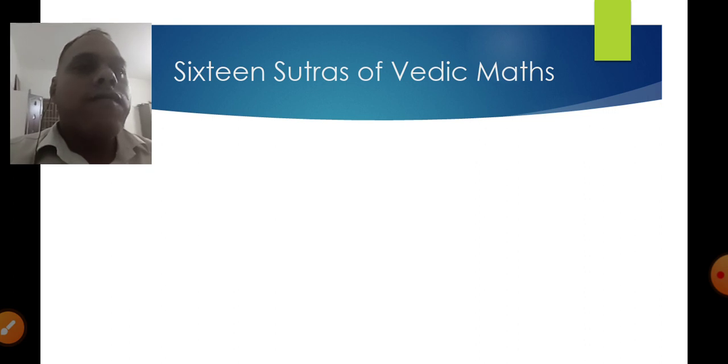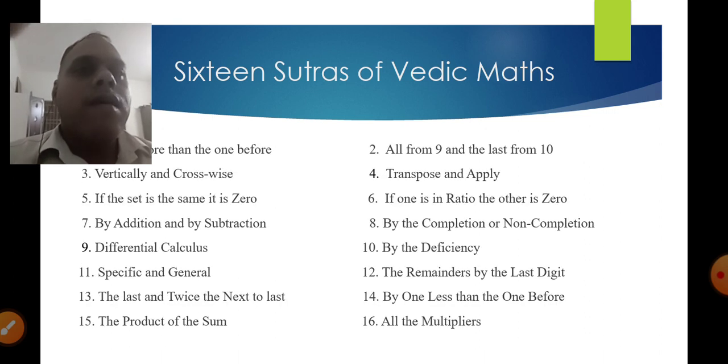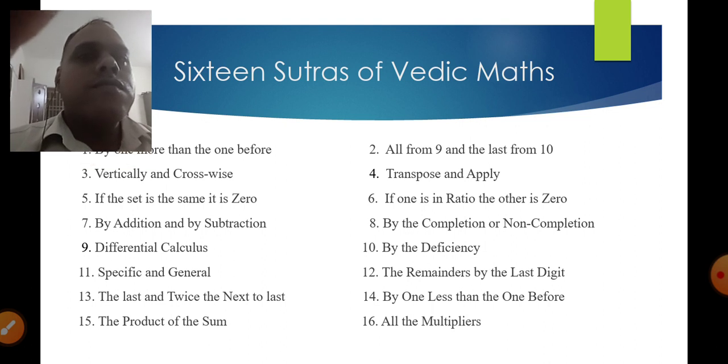The 16 Sutras of Vedic Math: first one is by one more than the one before; second, all from nine and the last from ten; third, vertically and crosswise; fourth, transpose and apply.